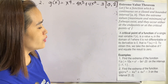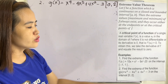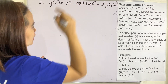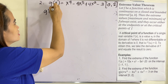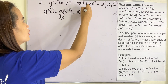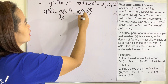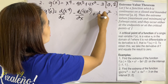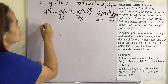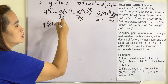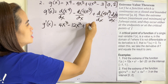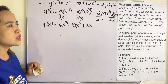Example 2: Find the extrema of the function G(x) = x⁴ − 4x³ + 4x² − 3 on the interval [0, 2]. Let us find the first derivative: G'(x) = 4x³ − 12x² + 8x. The derivative of the constant −3 is 0.